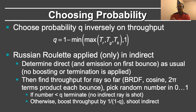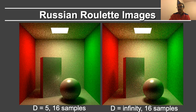Russian roulette should be applied only for the indirect path. You determine the direct lighting and the emission on the first bounce as usual — no boosting or termination applied to that. Then you find the throughput for the ray so far, which includes the BRDF, the cosine, and the 2π terms at each bounce. You pick a random number from 0 to 1: if the number is less than q, you terminate and no indirect ray is shot. Otherwise, you boost the throughput by 1 over 1-q, shoot the indirect ray, and continue. The differences in the final images are subtle, but the right image shows reduced variance and is actually unbiased because it enables you to set d equal to infinity.